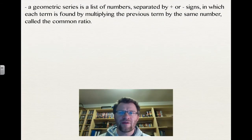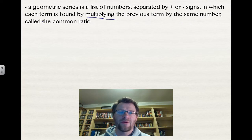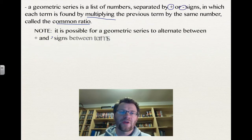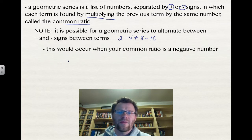A geometric series is a list of numbers separated by adding or subtracting signs, in which each term is found by multiplying the previous term by the same number — that's called the common ratio. It's basically the same thing as a geometric sequence, but now we're adding and subtracting these terms together. Note: it is possible for a geometric series to alternate between adding and subtracting signs, such as 2 minus 4 plus 8 minus 16. This occurs when your common ratio is a negative number — multiplying by negative 2 keeps changing the sign.